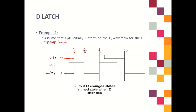Until E changes to 1. When E suddenly changes to 1, Q will follow D — it follows the waveform of D. Here D is 1, so Q is also 1. Then D changes to 0, so Q also becomes 0, as long as E is still equal to 1. Then E is 1 and D is 1, so Q is also equal to 1.